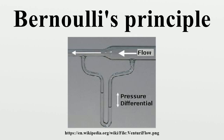If the fluid flow is irrotational, the total pressure on every streamline is the same and Bernoulli's principle can be summarized as total pressure is constant everywhere in the fluid flow. It is reasonable to assume that irrotational flow exists in any situation where a large body of fluid is flowing past a solid body — examples are aircraft in flight and ships moving in open bodies of water. However, it is important to remember that Bernoulli's principle does not apply in the boundary layer or in fluid flow through long pipes. If the fluid flow at some point along a streamline is brought to rest, this point is called a stagnation point, and at this point the total pressure is equal to the stagnation pressure.